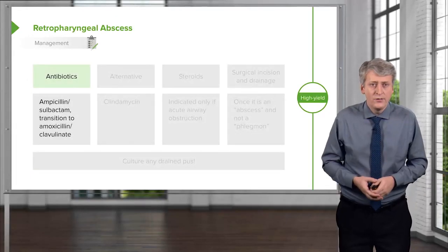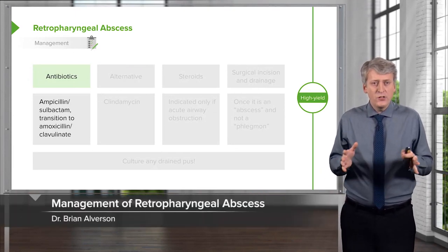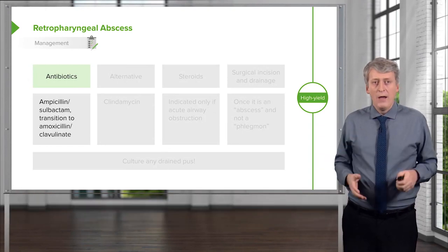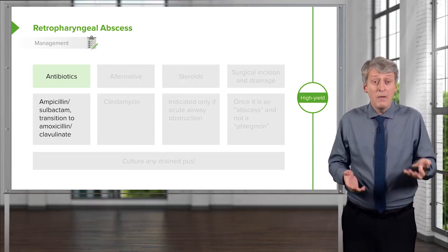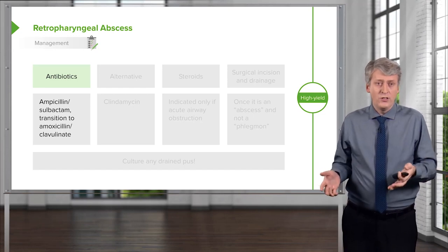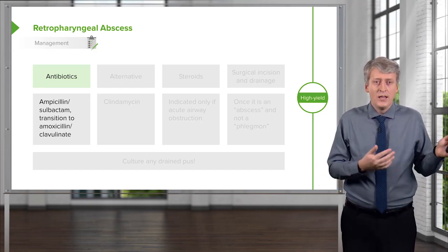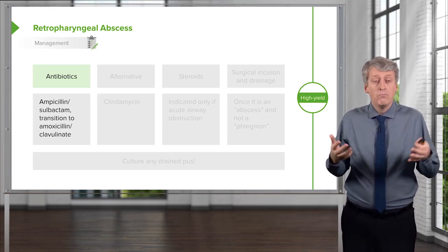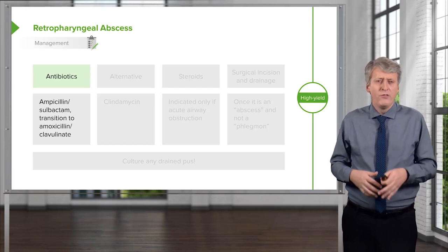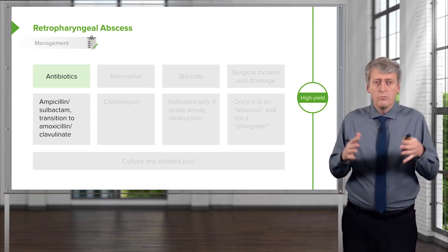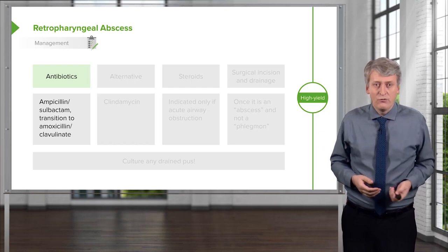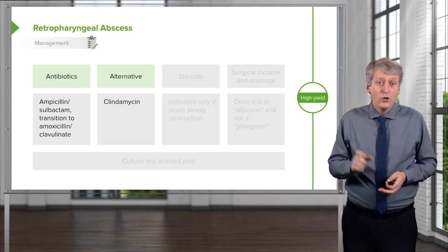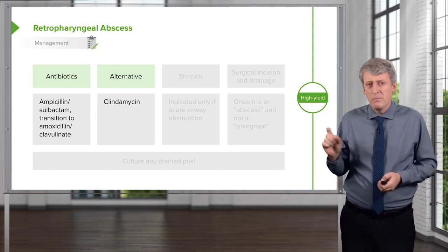For management, we first give antibiotics, especially if they're not yet ready to be drained. We'll give ampicillin-sulbactam. Occasionally that's all they need, and we transition them to amoxicillin-clavulanic acid. If they're allergic or we suspect MRSA, we might use clindamycin. If they're severely ill, we may use broad-spectrum antibiotics like vancomycin and ceftriaxone.